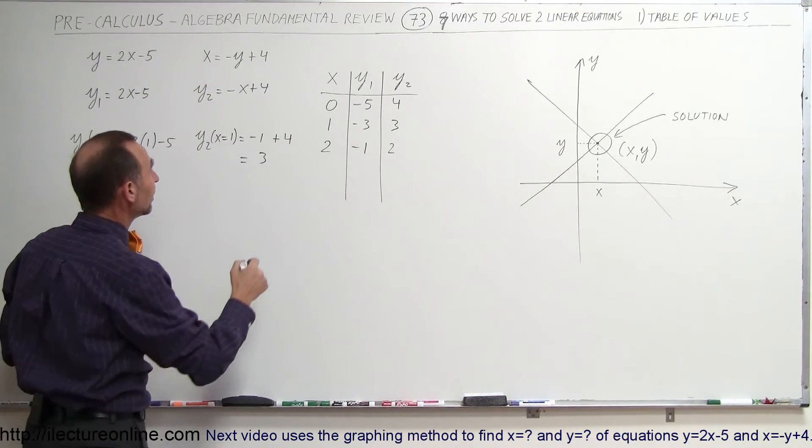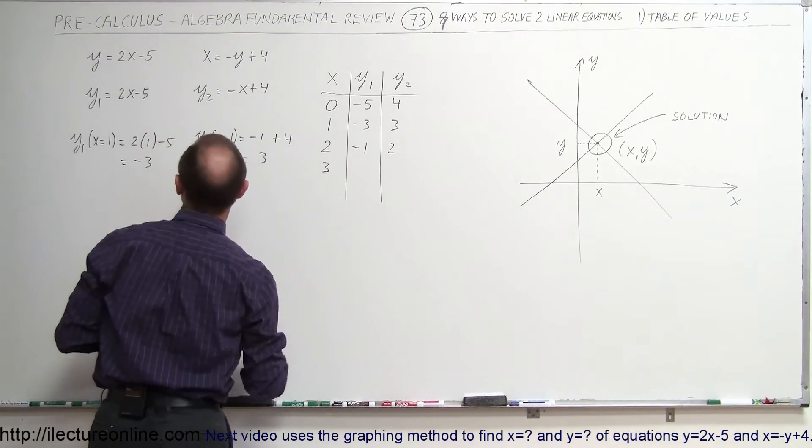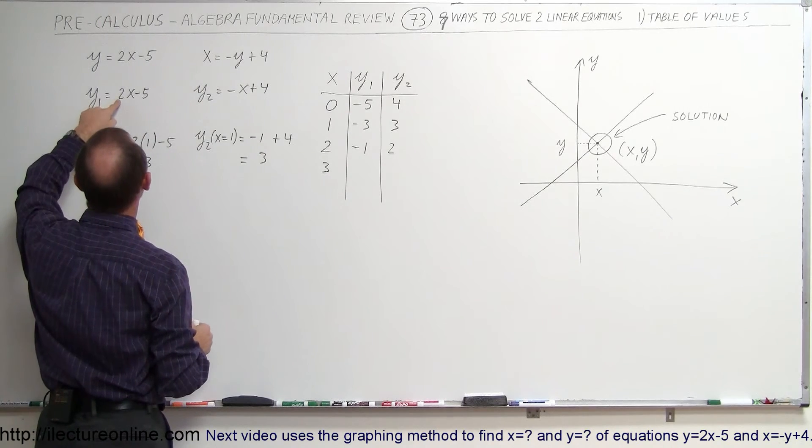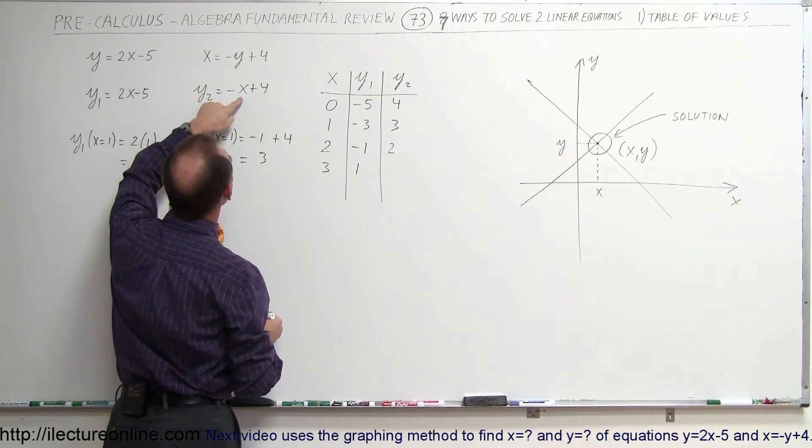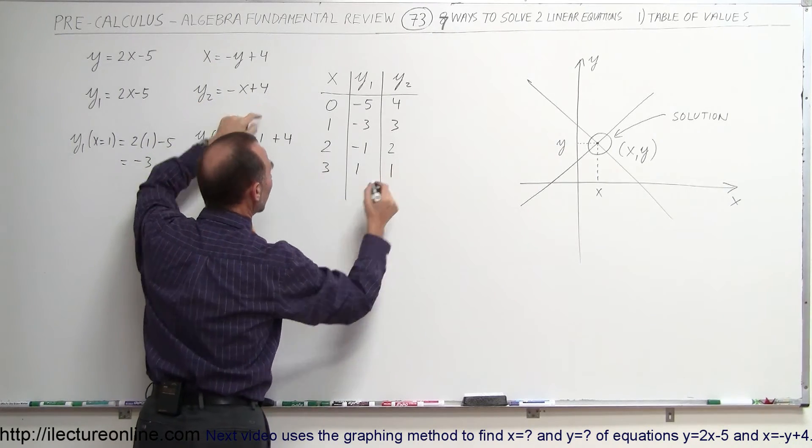Let's try one more value. Let's try x equals 3. When x equals 3, I get 2 times 3 is 6 minus 5, which is a positive 1. Here, minus 3 plus 4, which is a positive 1. Bingo!